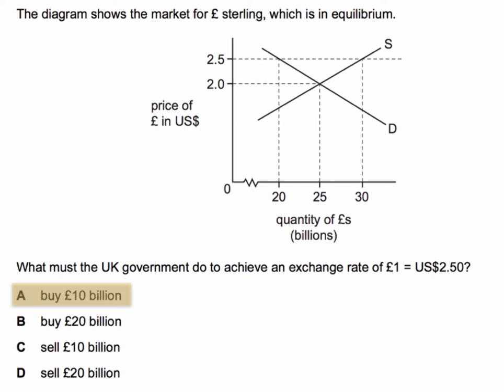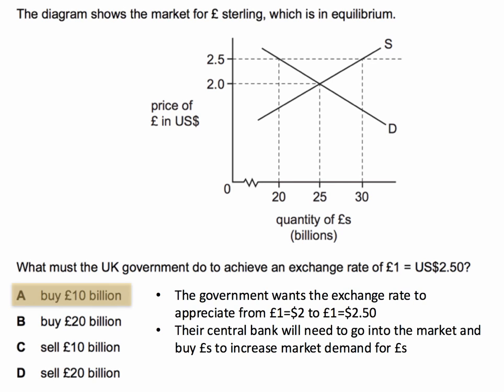So what's the reasoning behind this? We're currently at two dollars to the pound, but the government wants to appreciate the exchange rate from two dollars to two dollars fifty — so the price clearly needs to go up. They could use interest rates, but that's not given as one of the options. It's clearly going to be intervention in the market.